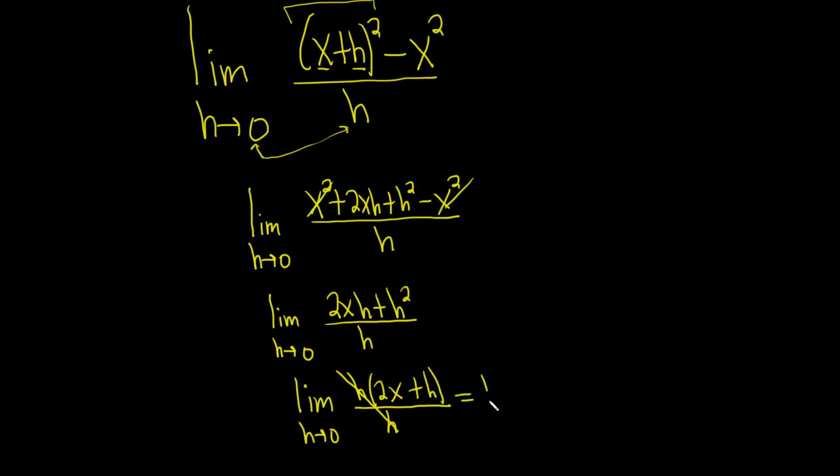So this is the limit as h approaches zero of 2x plus h. And so now we've finally reached a point where we can actually plug in zero. So when we do that we drop the limit sign. And so we get 2x plus zero. So we just get 2x. And that will be the final answer.